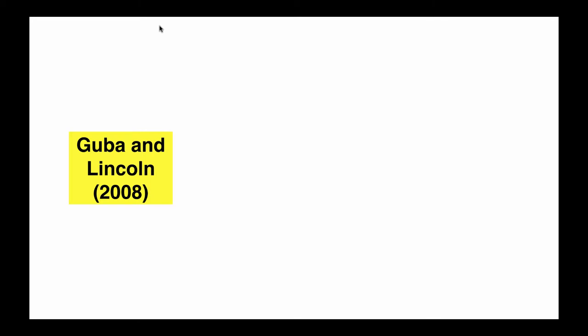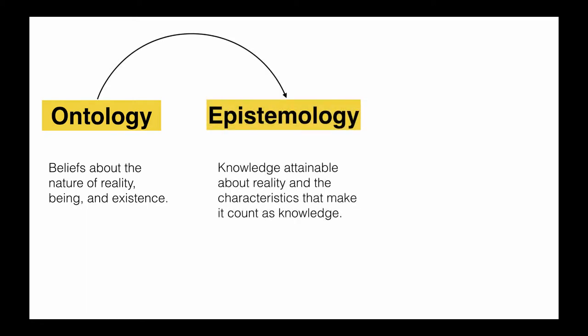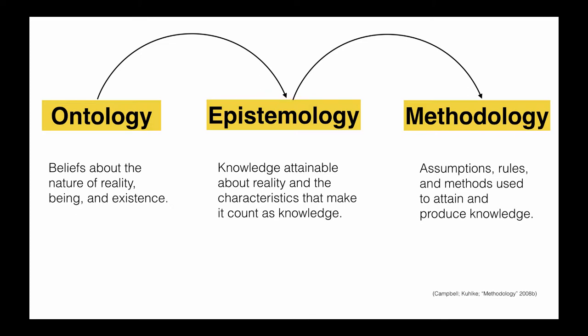Guba and Lincoln define paradigms as a structure that includes three components: ontology, epistemology, and methodology. These three components are interrelated because your beliefs about the nature of reality determine what you can know about it, and whether or not it is actually knowledge rather than speculation. Both ontology and epistemology have an impact on methodology — the rules, assumptions, and methods that you might use to attain knowledge. Though this presentation focuses on methodology, I'll review the relationships between all three aspects through a couple of examples.